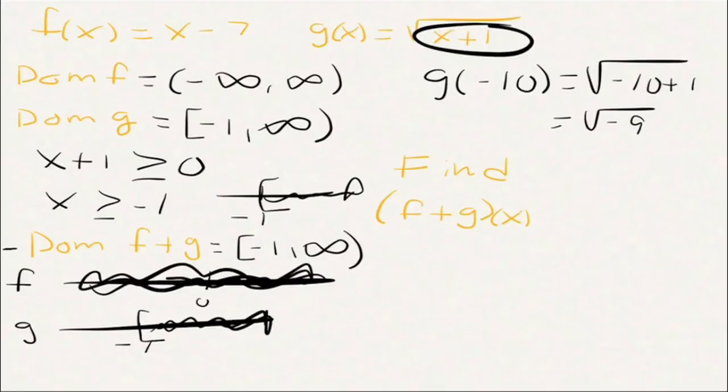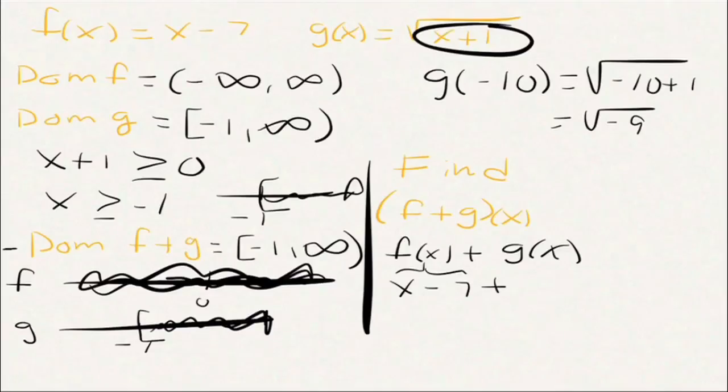But now they ask us to find the function f plus g. That's over here. That's going to be f(x) + g(x). It's the notation on notation. So we're going to take that x - 7, that's my f, and we're going to add it to the square root of x plus 1. Now, we can't combine those because they are not like radicals.